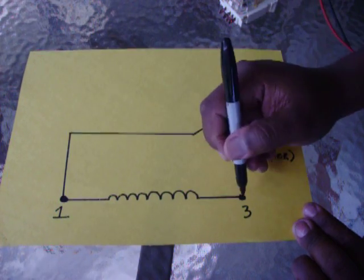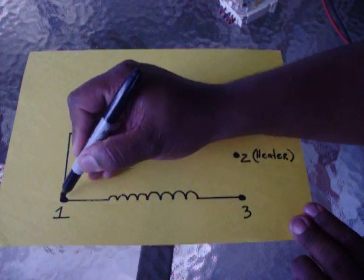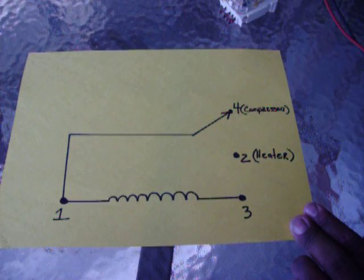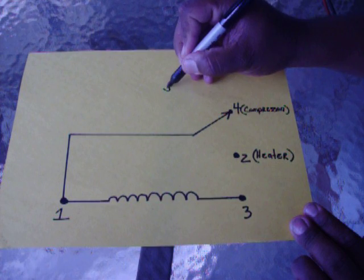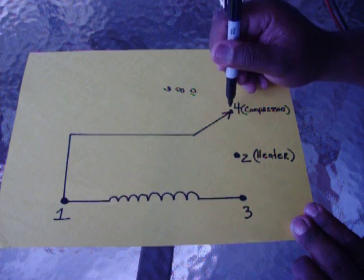Once you send power to one and three, the timer starts to spin. It stays connected from one to four, and it could vary. It could be six hours, it could be eight hours, it could be ten hours of run time.